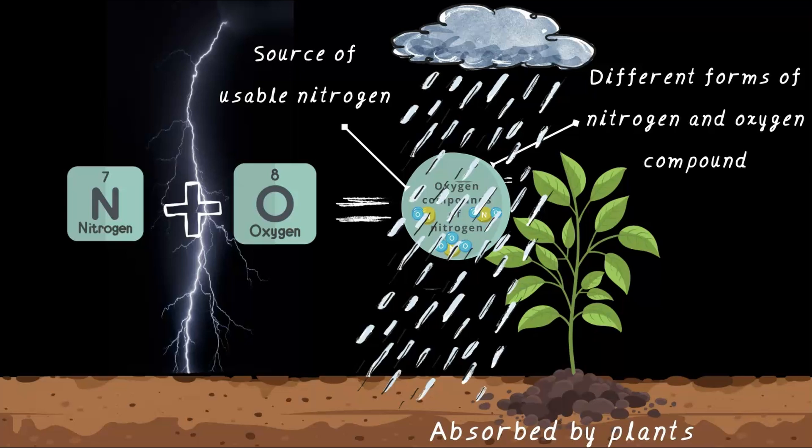Nitrogen is fixed by rhizobium and lightning. Nature is seriously amazing, right? Now, can you think of any other solutions nature has found for different problems? Keep thinking, look around you, you are sure to find one.